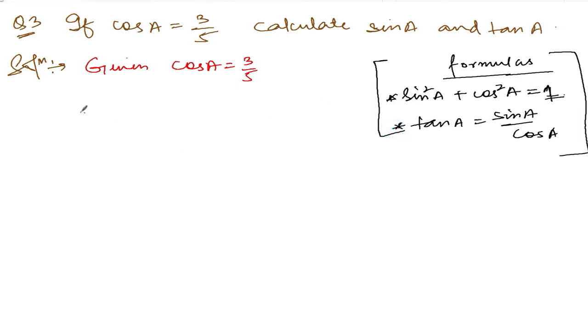Using sin²a + cos²a = 1, we do not know sin²a. Plus cos²a, cos a is 3/5, so (3/5)² = 1.